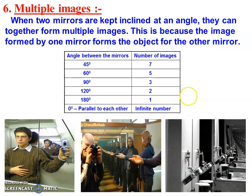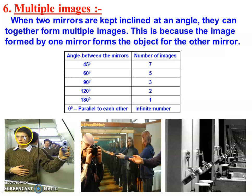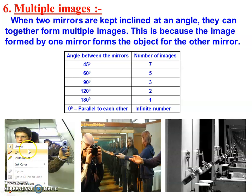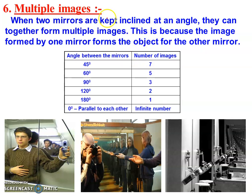You have seen many times that a person has a large number of images. When you go to the hairdresser, you can see many images of yourself because there are two mirrors. After reflection, we get several images. When two mirrors are kept inclined at an angle, they can together form multiple images.